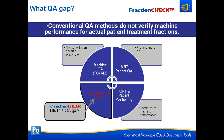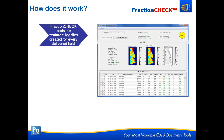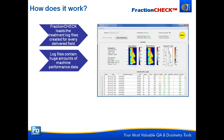FractionCheck fills this gap and gives you all four pieces of the pie. The really nice thing about it is that it uses machine logs and everything happens automatically. As a physicist, I know we don't have all the time in the world in our clinic, and we'd like to do as much QA in as little time as possible — that's really how we design our products. FractionCheck loads treatment log files that are automatically created for every delivered field. Varian systems create Dynalog and directory logs automatically. FractionCheck launched with Varian support, but in the next couple of months we're also going to support Elekta, with our own log file writing tool so it works exactly the same way.